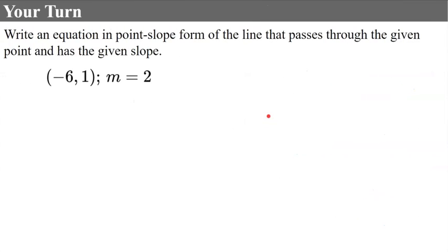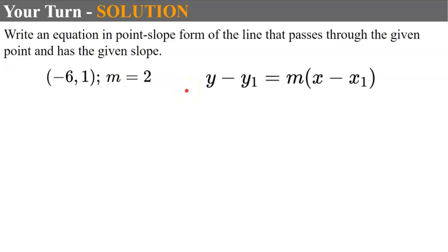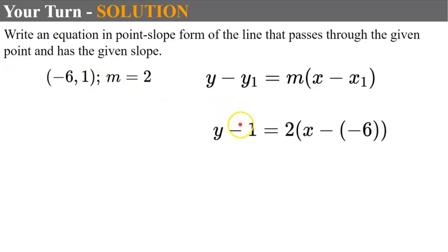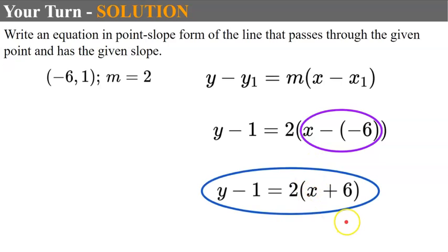Now it's your turn. Pause and write the equation in point slope form of the line passing through the point negative 6, 1 with a slope of 2. The y coordinate is positive 1, so y minus 1 equals 2 times the quantity x minus negative 6, which simplifies to x plus 6. So: y minus 1 equals 2 times the quantity x plus 6.